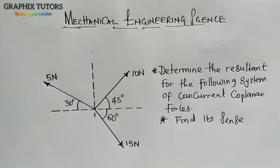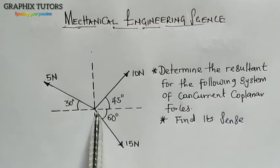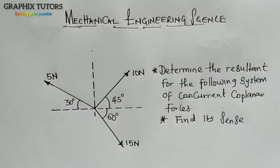Now we look at this System of Force. We call this System of Force a Concurrent Coplanar Force. Why do we call it a Concurrent Coplanar Force? When you say a System of Force is Concurrent, it means that all the forces — the line of action of the forces — are meeting at one point. That point is called the Point of Concurrency. When you say Coplanar, it means the forces are on the same plane.